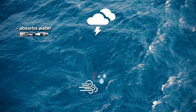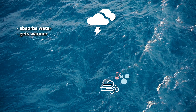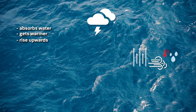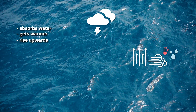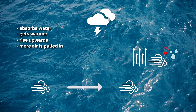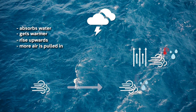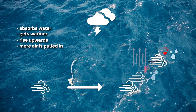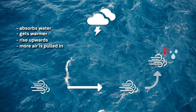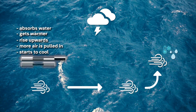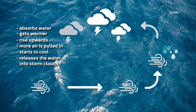When air moves over a warm ocean, the air absorbs water and gets warmer. As the air gets warmer, it starts to rise upwards. As the air rises, more air is pulled in from below, which also starts to get wetter and warmer. As warm air rises high enough into the sky, it starts to cool and releases the water into storm clouds.